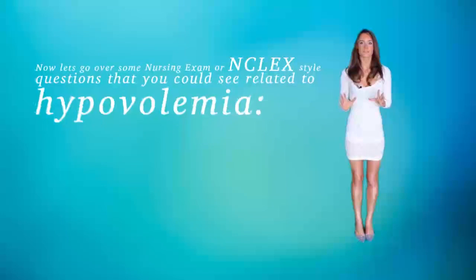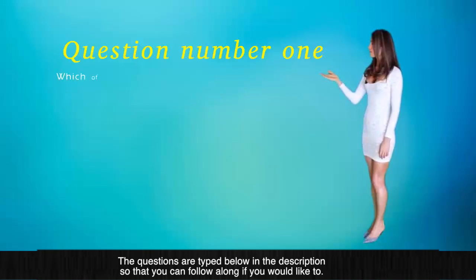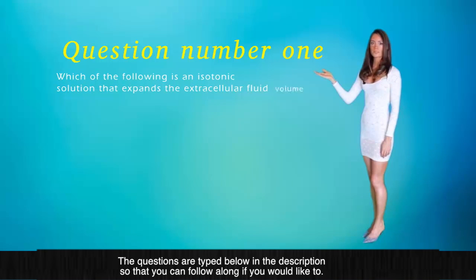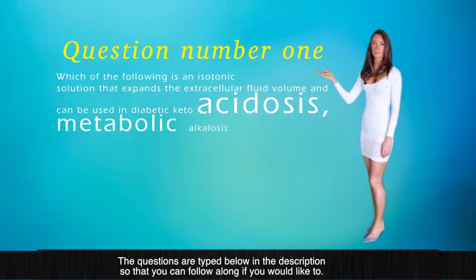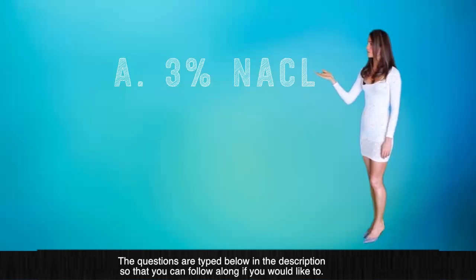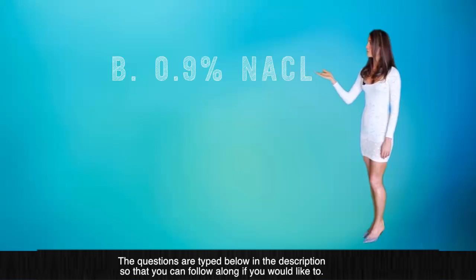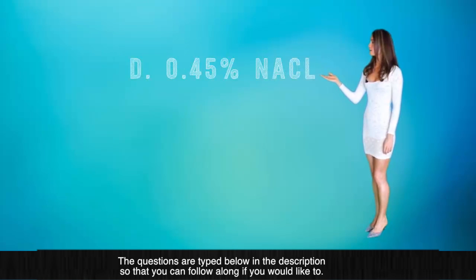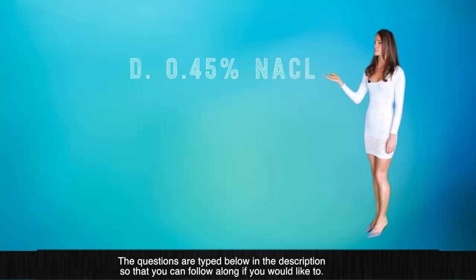Now let's go over some NCLEX-style questions. Question number one: Which of the following is an isotonic solution that expands the extracellular fluid volume and can be used in diabetic ketoacidosis, metabolic alkalosis, and hypercalcemia? A. 3% sodium chloride. B. 0.9% sodium chloride. C. Dextran 40% in normal saline. Or D. 0.45% normal saline.